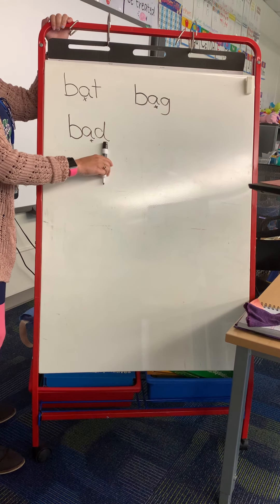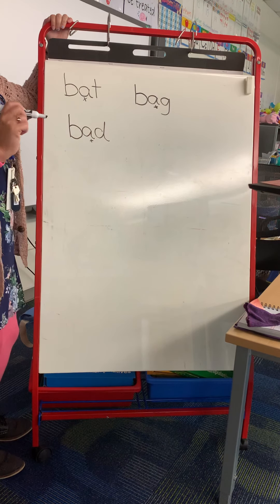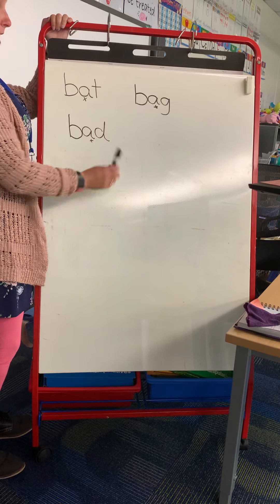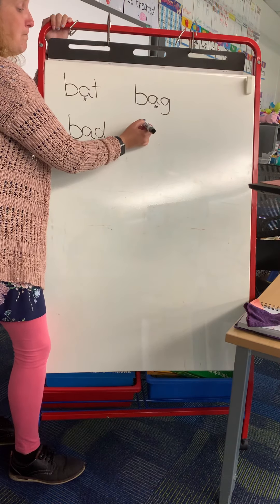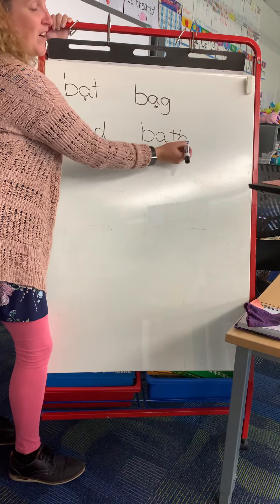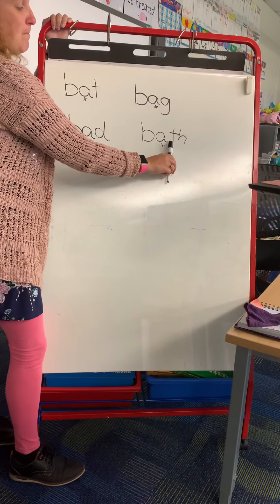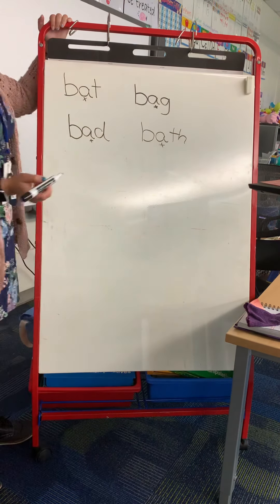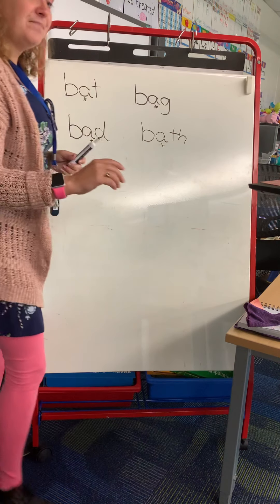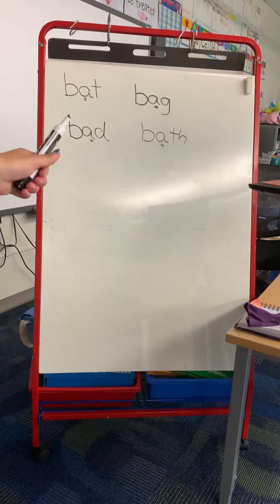My next word is bad. Mark my vowel. David in our story last week made some bad choices. And the last word I want us to talk about is bath. We have our T-H — we stick our tongues out. Bath. Mark my vowel. I like to take a bubble bath.